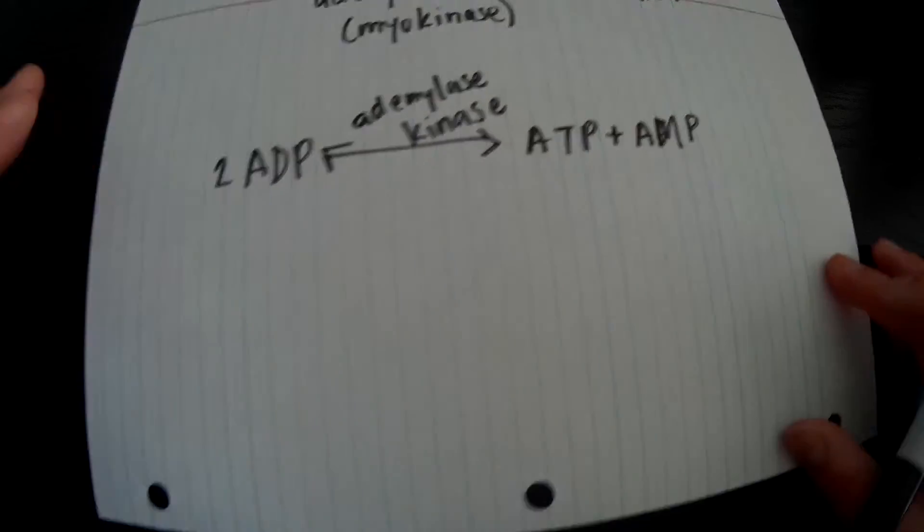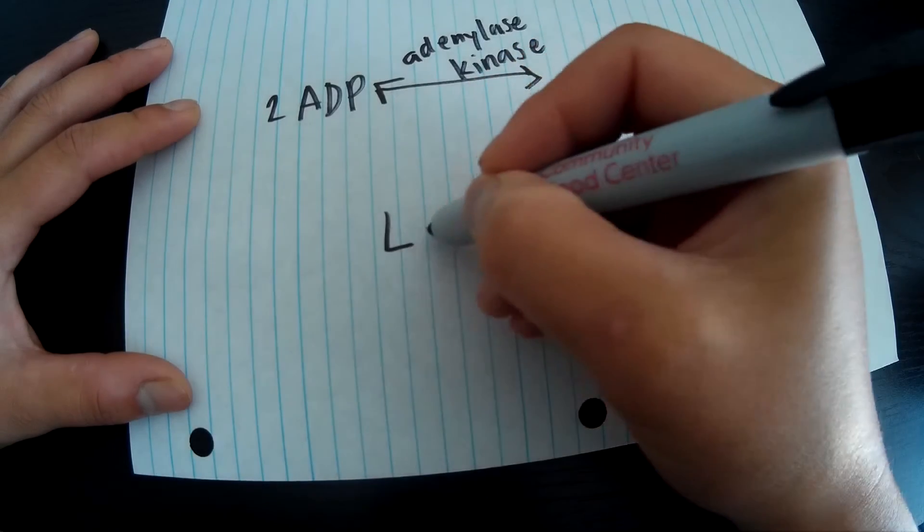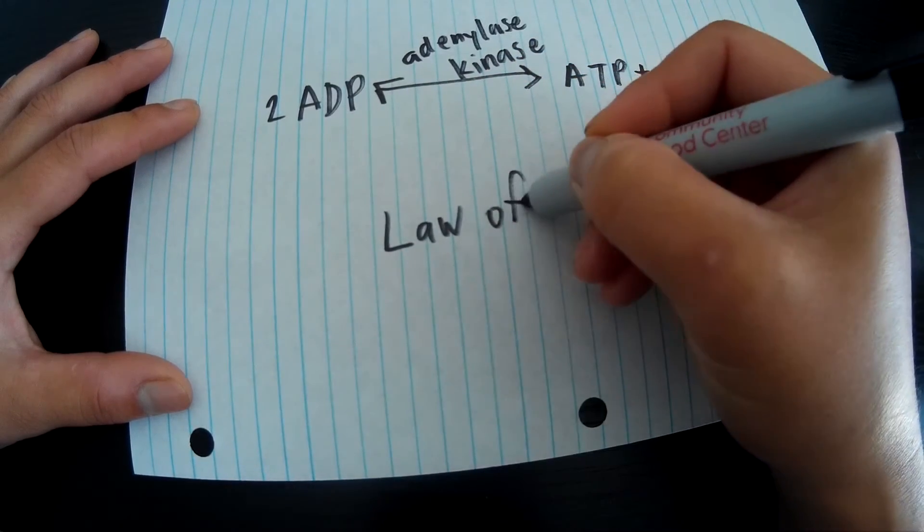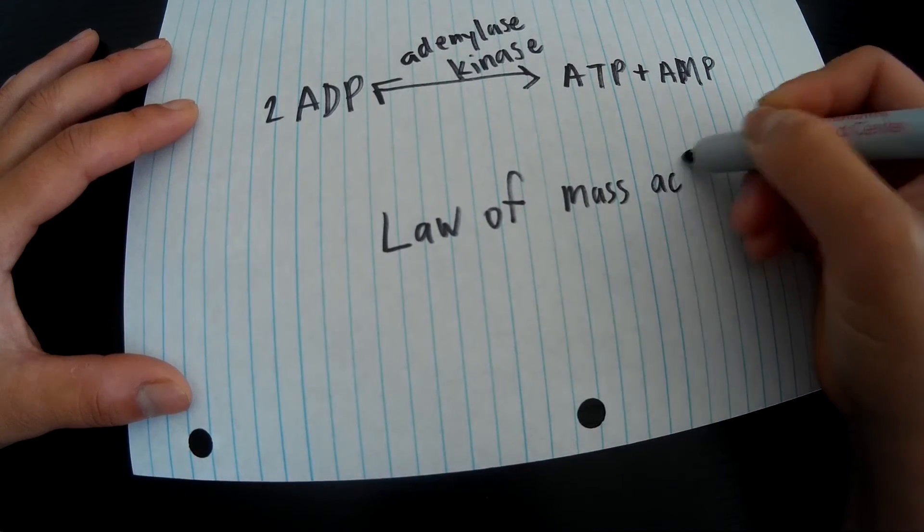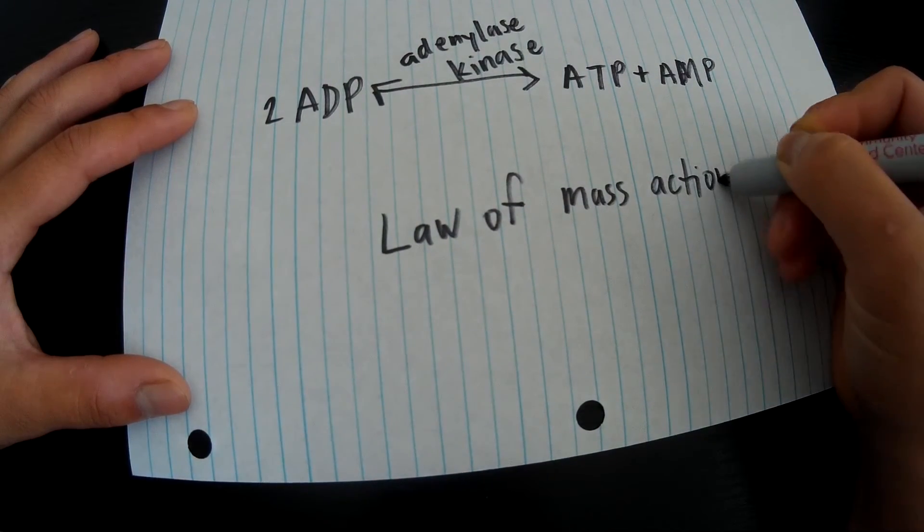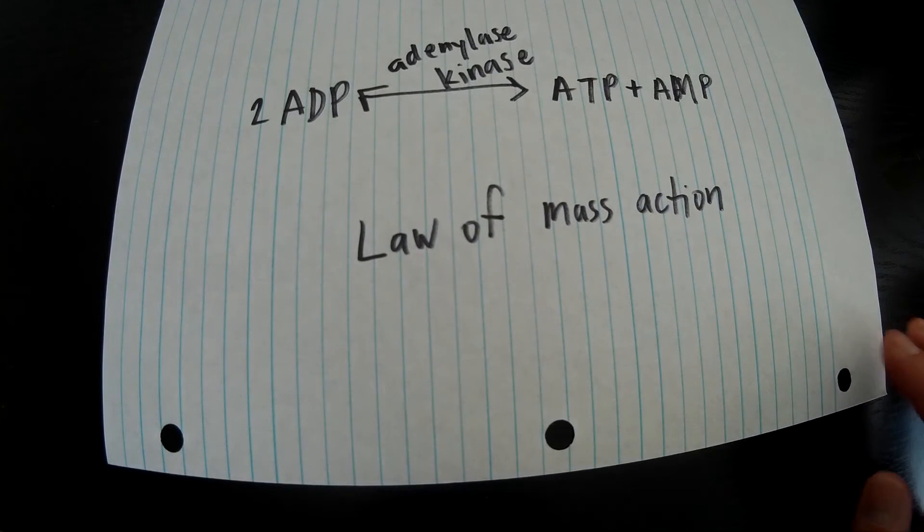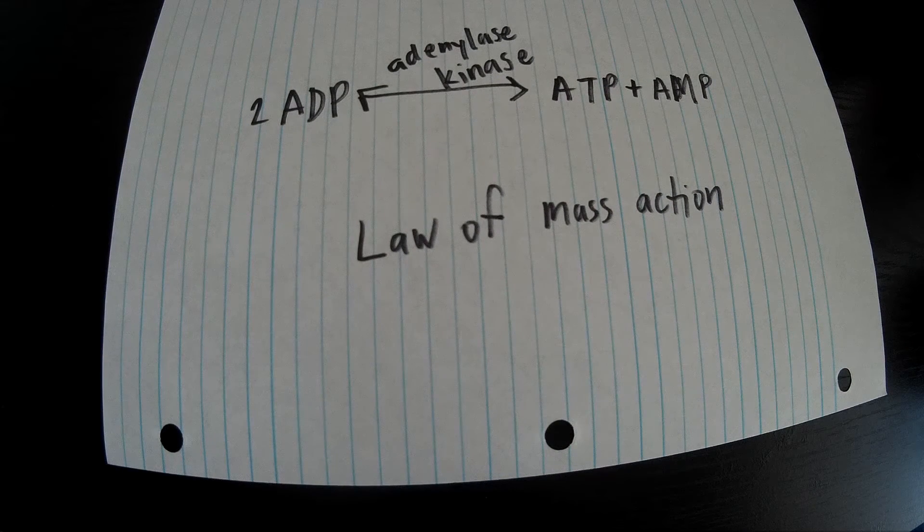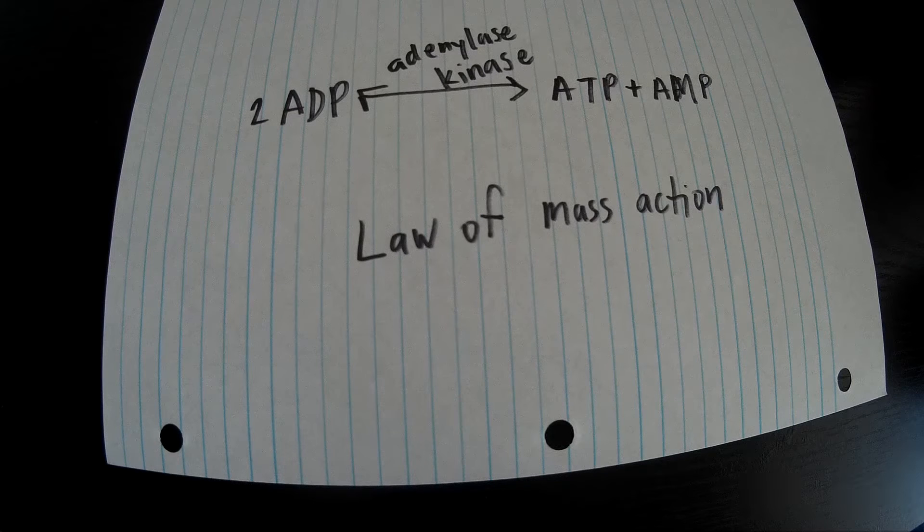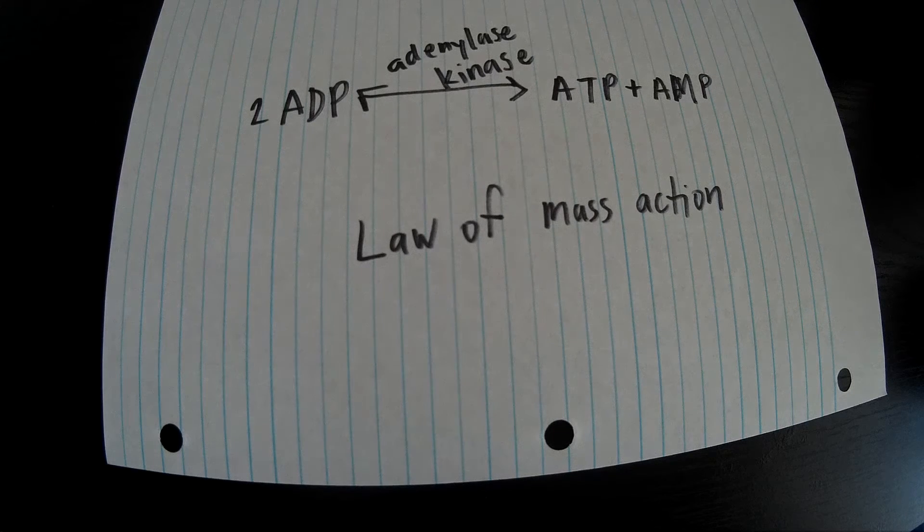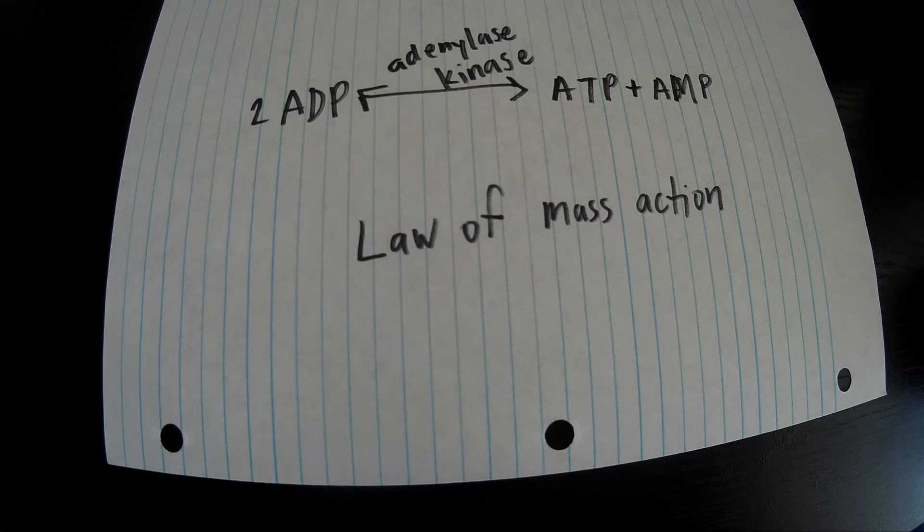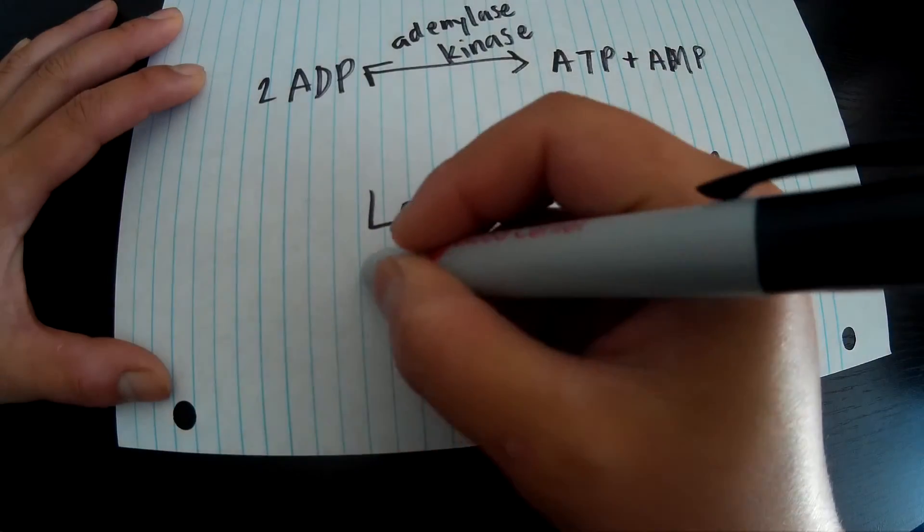So basically this will continue on through the law of mass action. The law of mass action basically states that the more demand that this thing is in, the more it will occur. Basically we're limited by ADP, so the more ADP that is in the cell, the more the creatine kinase and the adenylate kinase is going to be used. There's going to be less creatine in our system because it's going to be catching up all of these phosphates.